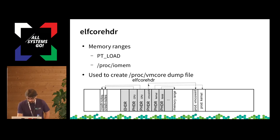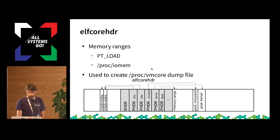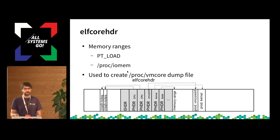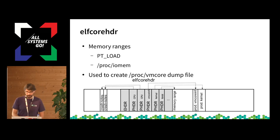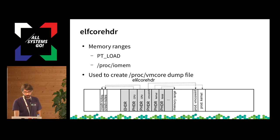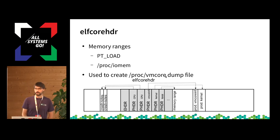Last but not least, you have the kernel memory itself. kexec-tools parses /proc/iomem to find the System RAM parts and where the kernel is loaded, and takes that address and puts it into some headers. This structure is later used to create a file in the capture system called /proc/vmcore, from which you can create the dump file.